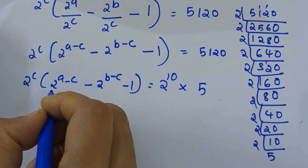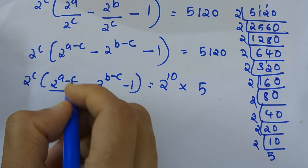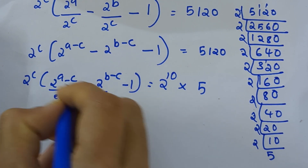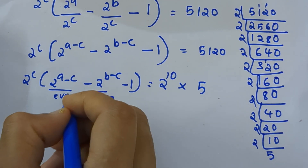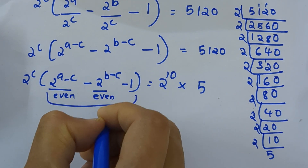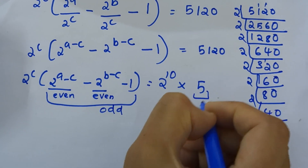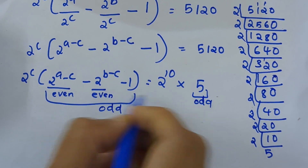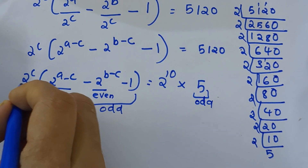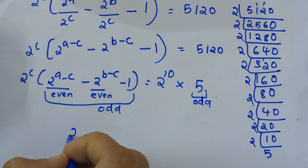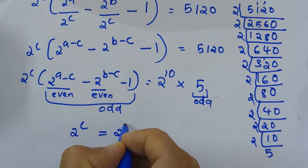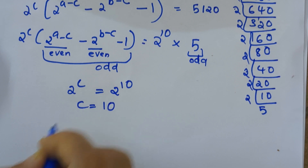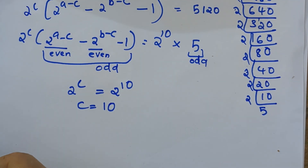Here, 2 raised to a minus c and 2 raised to b minus c are even numbers, so 2 raised to a minus c minus 2 raised to b minus c minus 1 is an odd number. Looking at the equation, we can say 2 raised to c equals 2 raised to 10, which implies c equals 10.